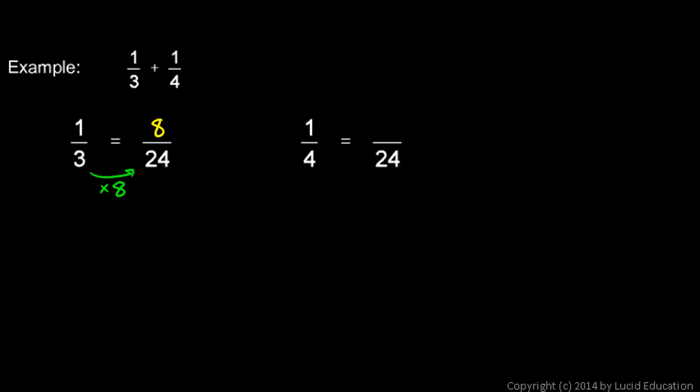Now the 1 4th. 4 times what is 24? 4 times 6 is 24, so I also have to multiply the 1 by 6. So 1 4th is equal to 6 over 24. So now my 1 3rd has been rewritten as 8 over 24, and the 1 4th is rewritten as 6 over 24.